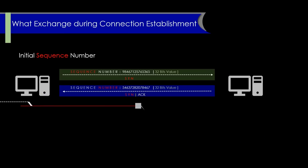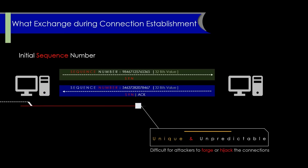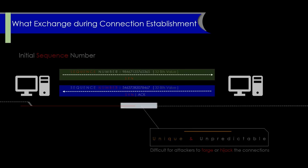The initial sequence number is important because it helps ensure that sequence numbers used in a TCP connection are unique and unpredictable, which makes it more difficult for attackers to forge or hijack the connection.